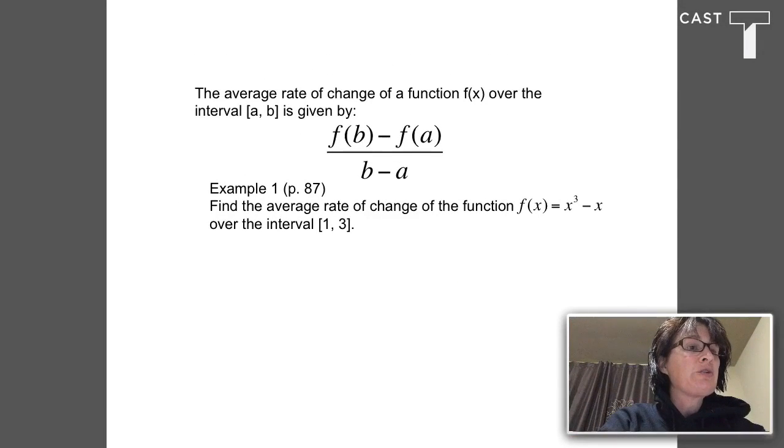We start in section 2.4 with a definition for the average rate of change of a function over an interval. This goes in your notes paper: the average rate of change of f(x) on the interval [a, b] is f(b) minus f(a) over b minus a.